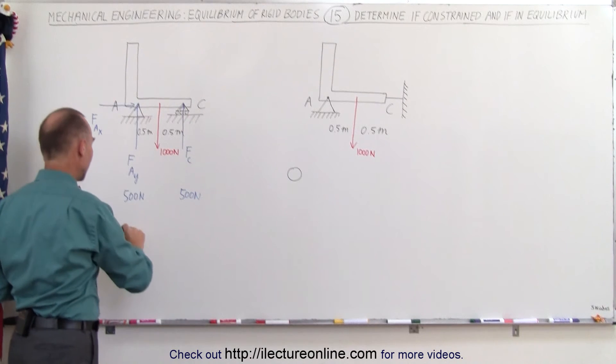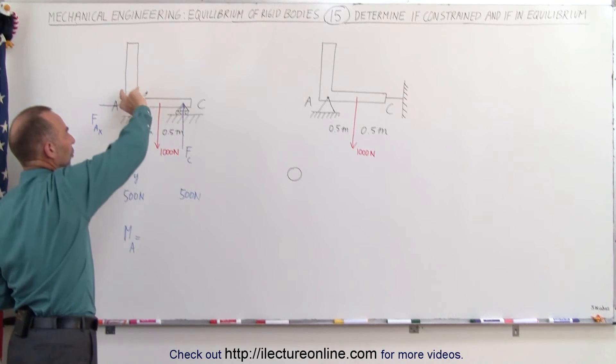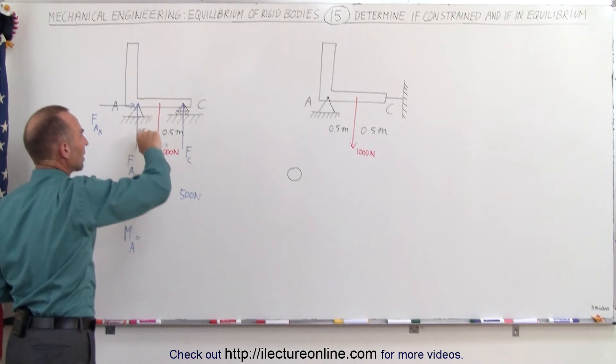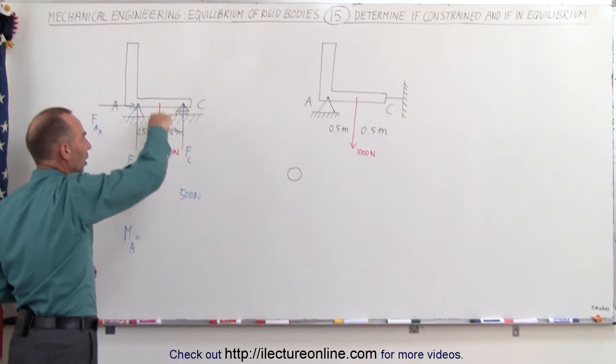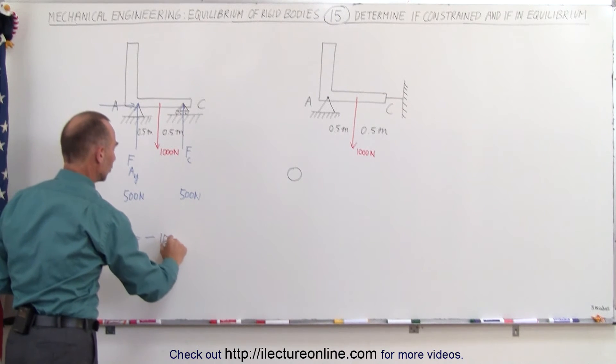If you want to calculate the moment at A, the moment at A equals the force that causes the rotation relative to A. It's in a clockwise direction, so that would be a negative moment: negative 1000 newtons